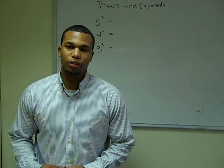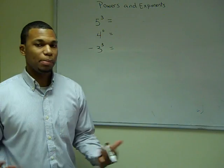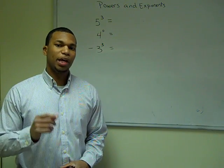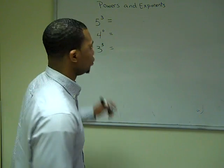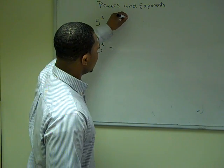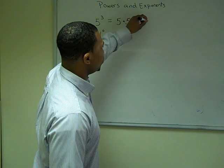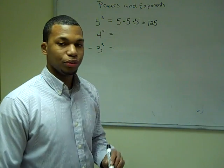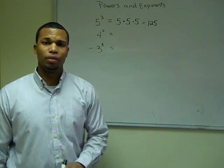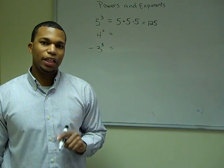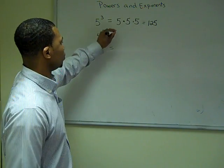Here are some exponents for us to solve. First, if we have five to the third power, that means we're going to take the base five and multiply it by itself three times. So this will be five times five times five, which is equal to 125. Next, we have four to the zero power. That's a rule — anything raised to the zero power is always one. So my answer is one.